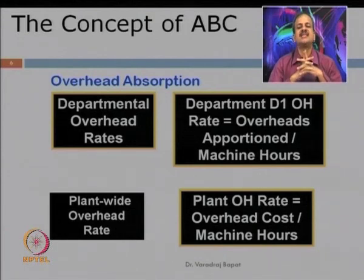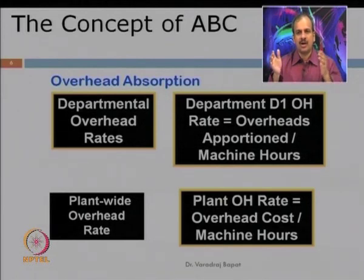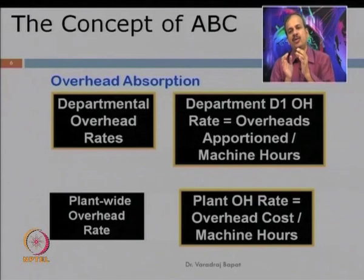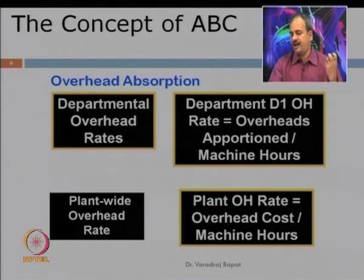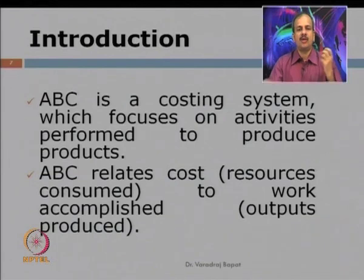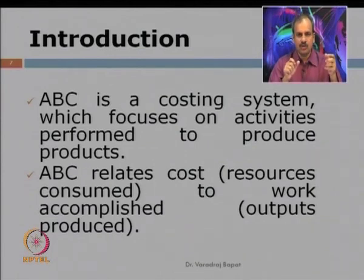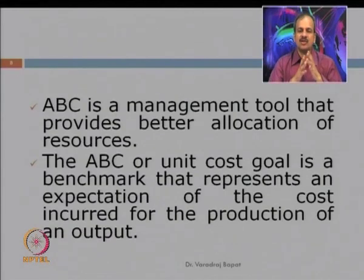In the plant-wise overhead rate, we get the total overhead cost divided by total hours to get the plant-wise overhead rate. Under the departmental system, we calculate the overhead for the department and divide by some base — in this case machine hours — which gives us the departmental overhead rate. In ABC costing, we try to relate the cost, that is the resource consumed, to the work accomplished, that is units produced. This serves as a good management tool because it leads to better allocation of resources.